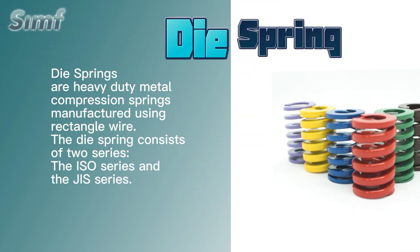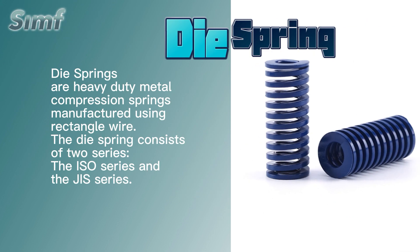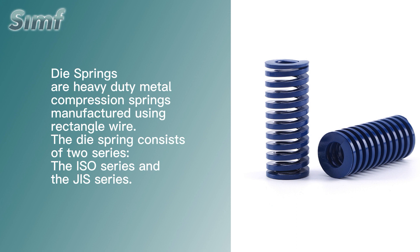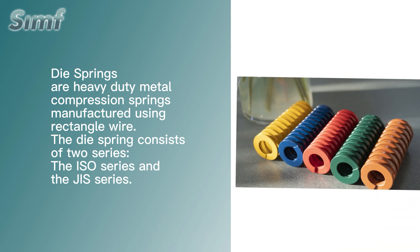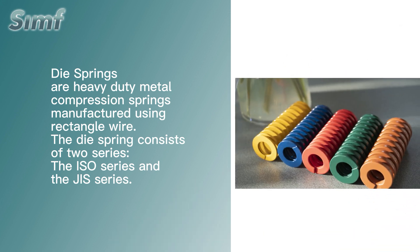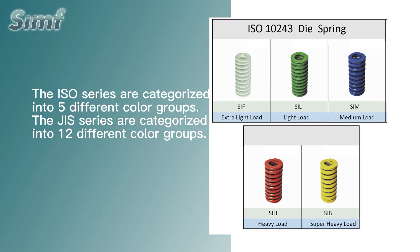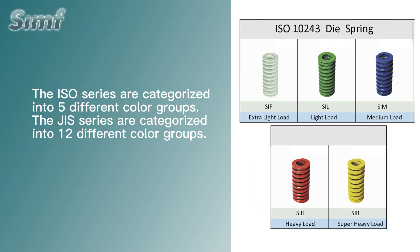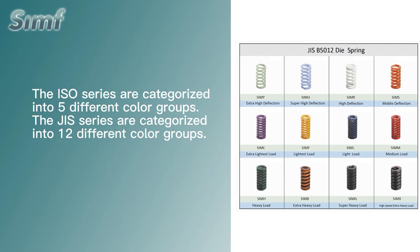Die springs are heavy duty metal compression springs manufactured using rectangle wire. The die spring consists of two series: the ISO series and the JIS series. The ISO series are categorized into five different color groups, and the JIS series are categorized into 12 different color groups.